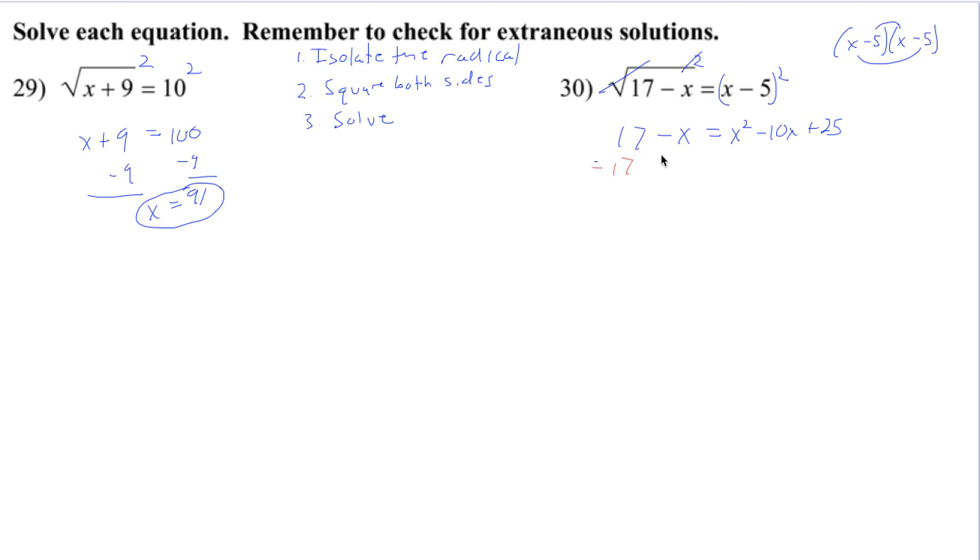So we subtract 17 from both sides and add x to both sides. And then after we do that, we see if we can factor. So we've got a zero here on the left. x squared minus 9x plus 8.